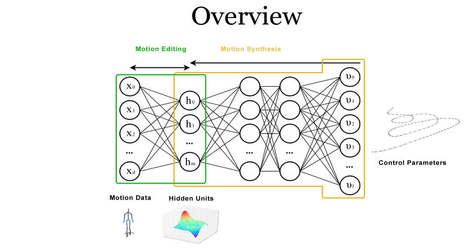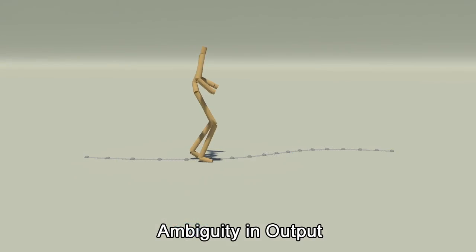As the input trajectory does not fully specify the motion, doing a naive regression results in the potential outputs being averaged, causing the character to appear to float.